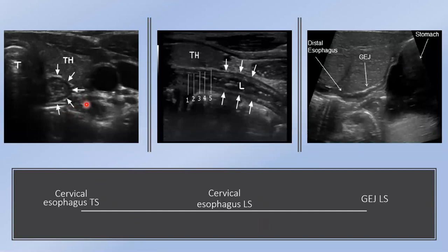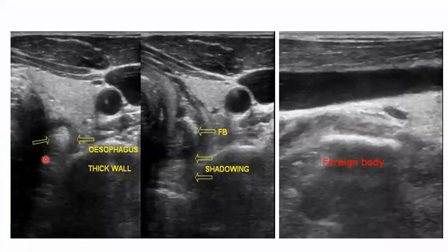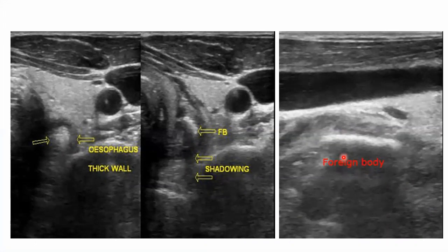This ultrasound of the neck shows the cervical esophagus in transverse and longitudinal sections. This is the gastroesophageal junction in longitudinal section. Here the esophageal wall is thickened, and a foreign body is impacted in the cervical esophagus with posterior acoustic shadowing — the longitudinal section shows a linear echogenic focus with posterior acoustic shadowing.